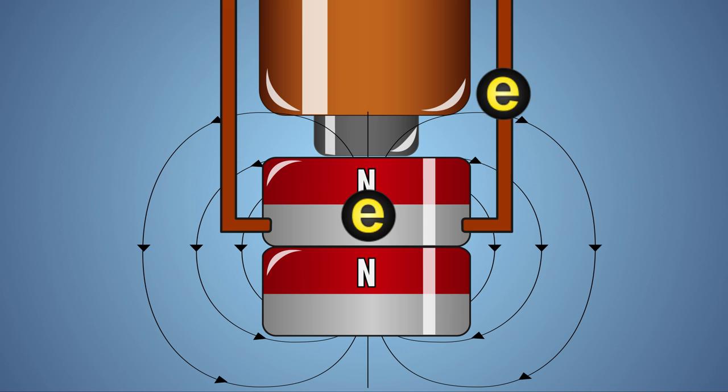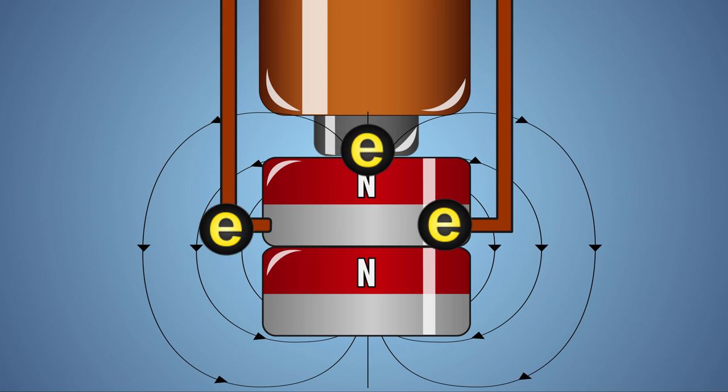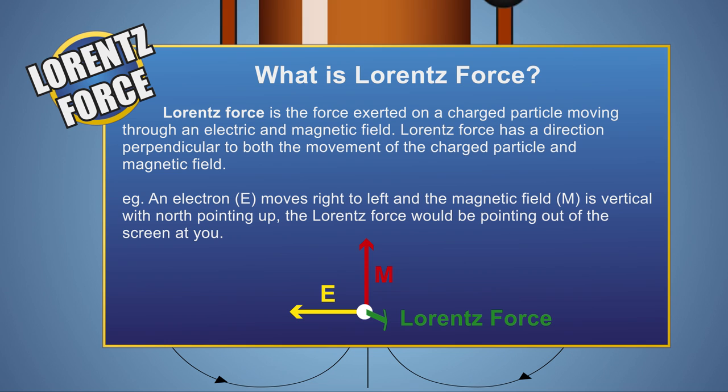When electrons travel perpendicular to a magnetic field, a force known as Lorentz force is generated. Lorentz force is a force exerted on a charged particle, like an electron, when it moves through a magnetic field. Lorentz forces are strongest when the magnetic field and moving electrons are perpendicular, like in our motor, and weakest when they run parallel.